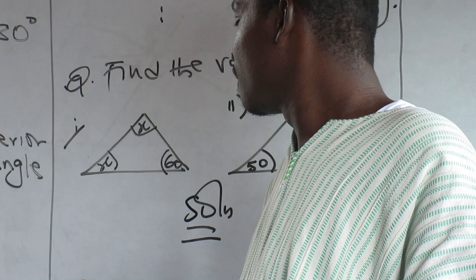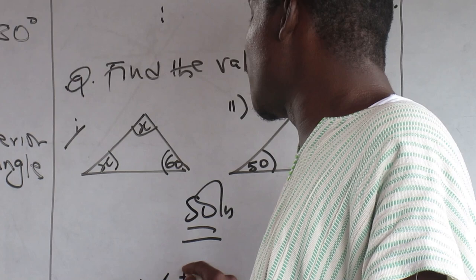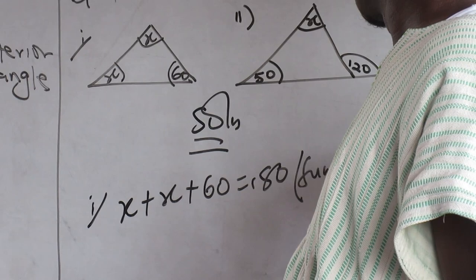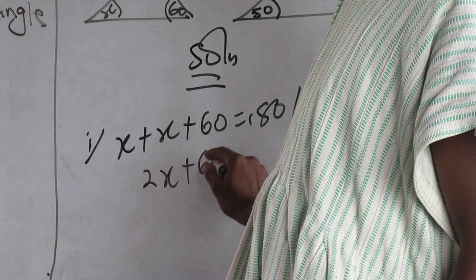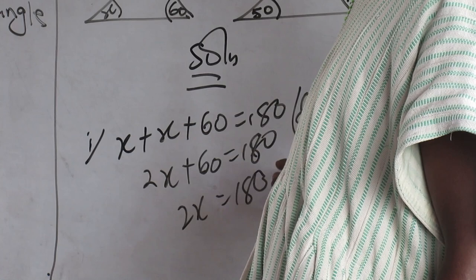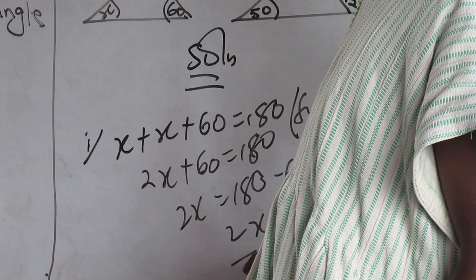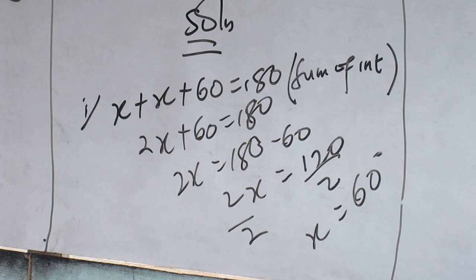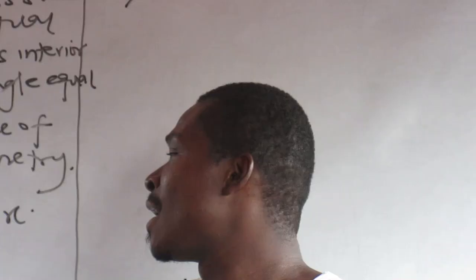Find the value of X. Let's go. All the angles are inside. So I will just say sum of interior angles of a triangle are what? 180. X plus X is what? 2X. 60 equals what? 180. 2X equals 180 minus what? 60. 2X equals what? 120. X is what? 60. So X is 60 degrees.